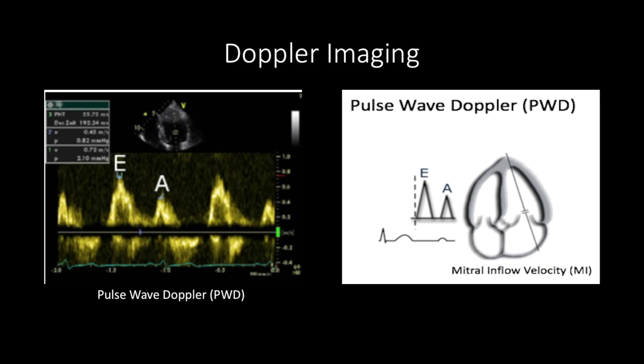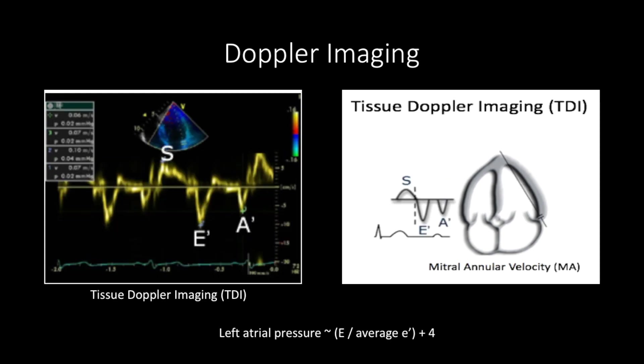To measure the motion of the left ventricle myocardium during diastole, we will use tissue Doppler imaging (TDI). It is essentially pulse wave Doppler optimized for viewing myocardial motion. In the apical 4-chamber window, press Doppler and then select TDI. Place the indicator on the septal annulus and press start.